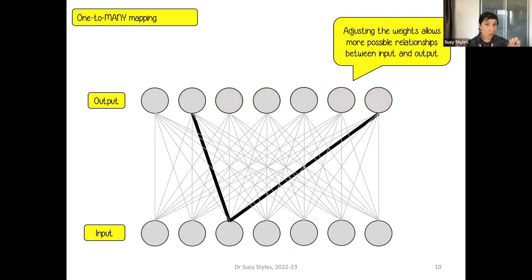So if we adjust the weights in the network, if we adjust the amount of connectivity that can pass from each node in the input layer to each node in the output layer, then we can end up with a more subtle system. So now when we activate one node in the input layer, we might be able to represent that input with two nodes in the output layer. And this allows a much more flexible way of transforming information from an input to an output.